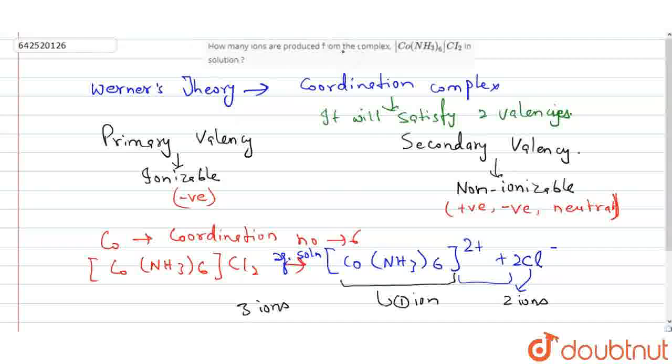So the answer to how many ions are produced from the complex [Co(NH3)6]Cl2 in solution is three ions.